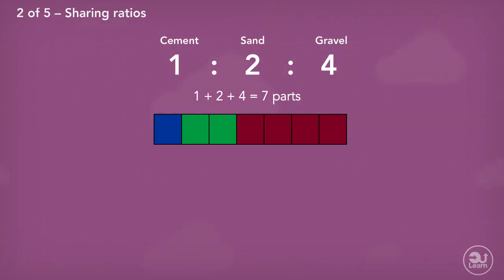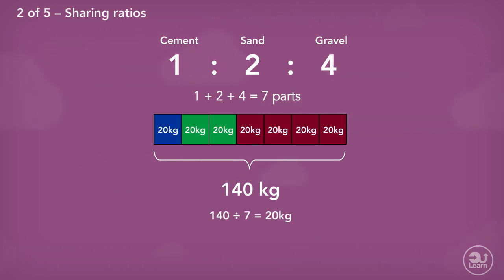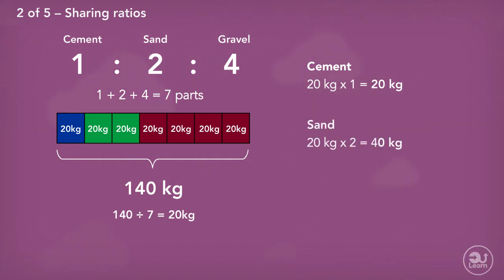Tunde wants to make a total of 140 kilograms of concrete mix, so 140 must be equal to seven parts. To find out what one part is worth, we divide 140 by seven, which gives us 20 kilograms. Now that we know one part is worth 20 kilograms: for cement, multiplying one part by 20 gives us 20 kilograms; for sand, multiplying two parts by 20 kilograms gives us 40 kilograms; and for gravel, multiplying four parts by 20 kilograms gives us 80 kilograms.